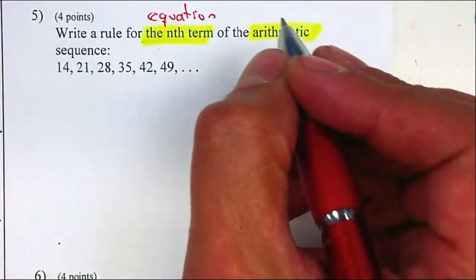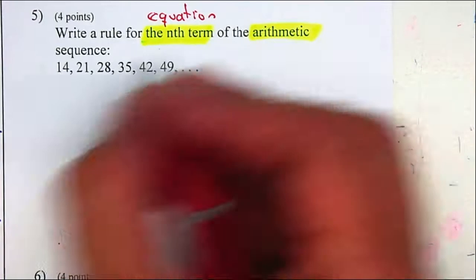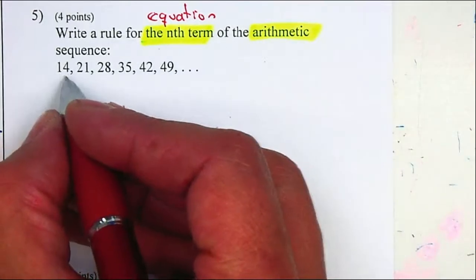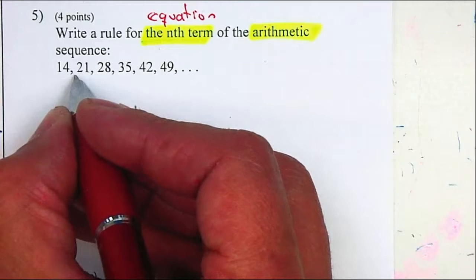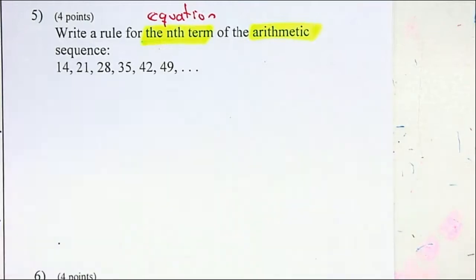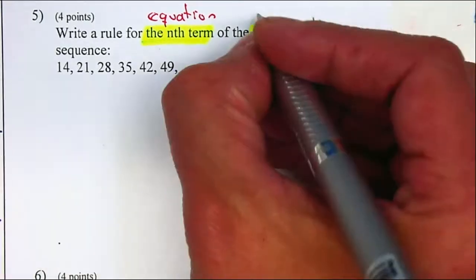If we're looking for the equation, one way of doing it is, what do I need to multiply 14 to get to 21? Or what do I need to add? It will be 7. So therefore, it should say 7n.